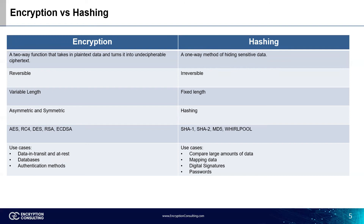Now let's talk about the use cases where encryption and hashing can be utilized for different purposes. Encryption can be used for encrypting data in transit and at rest, for storing and retrieving data in databases, and for authentication methods. Hashing, on the other hand, can be used to compare large amounts of data, for mapping data in digital signatures, and on passwords.